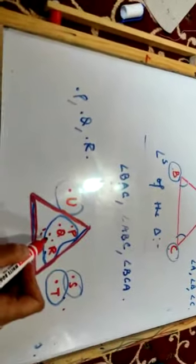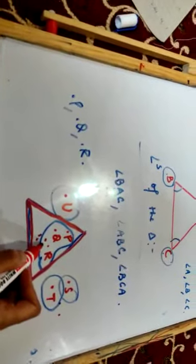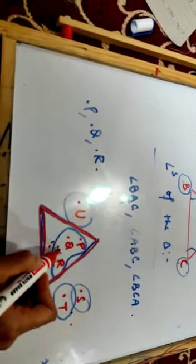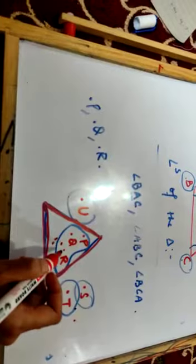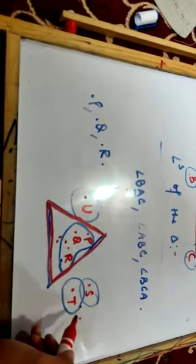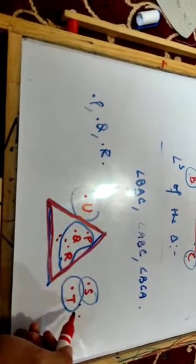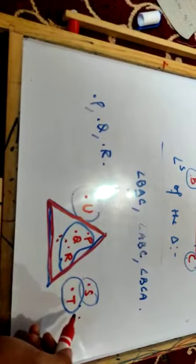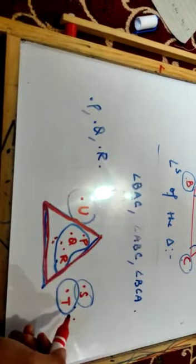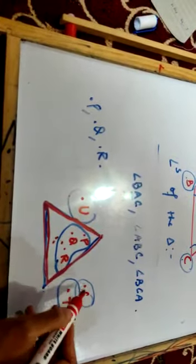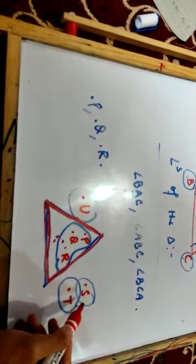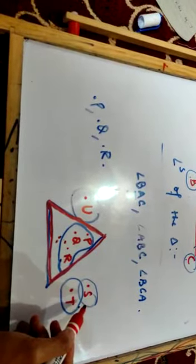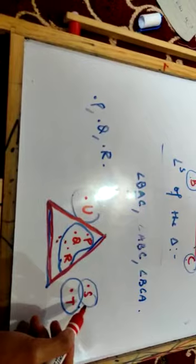Points lying within the boundary of the triangle are said to be lying in the interior part of the triangle. Points lying outside the boundary of the triangle are said to be lying in the exterior part of the triangle.